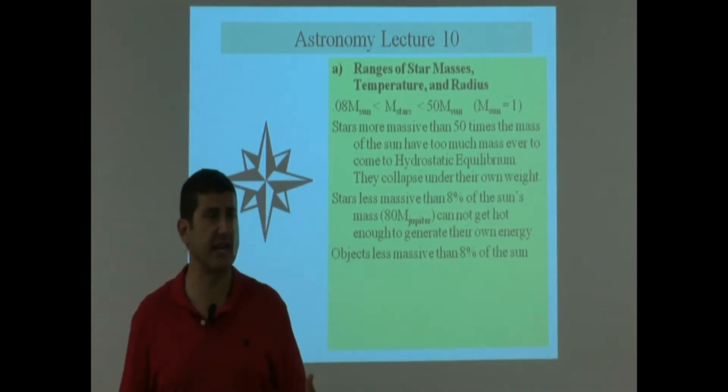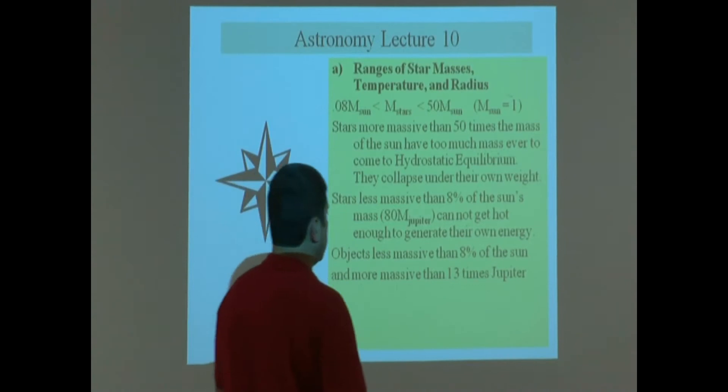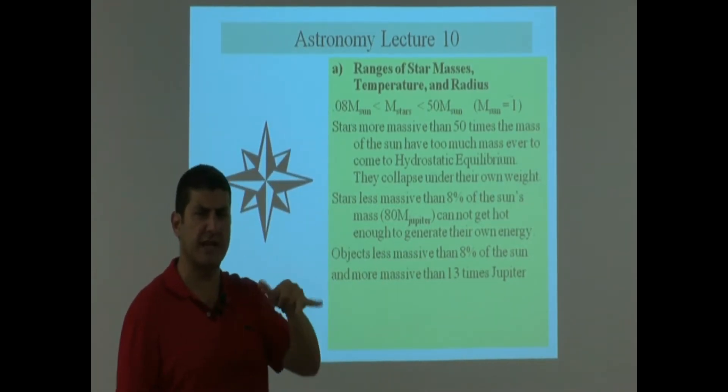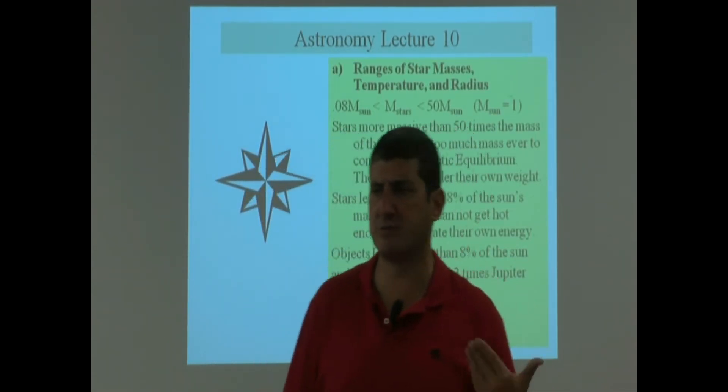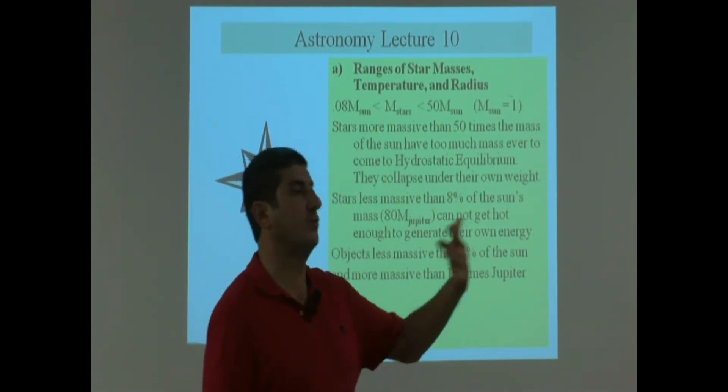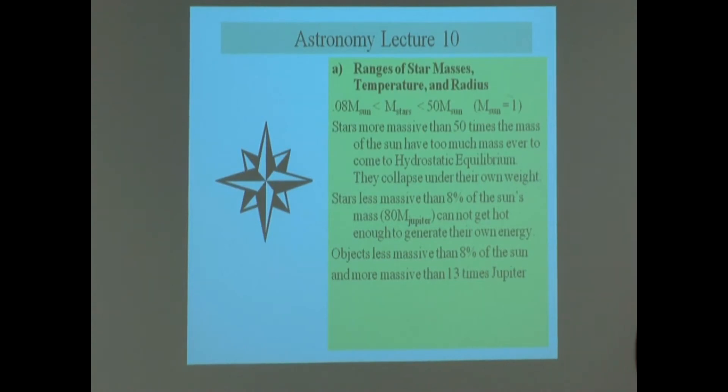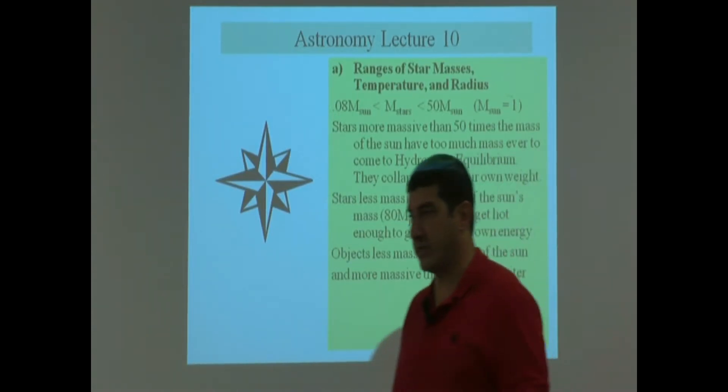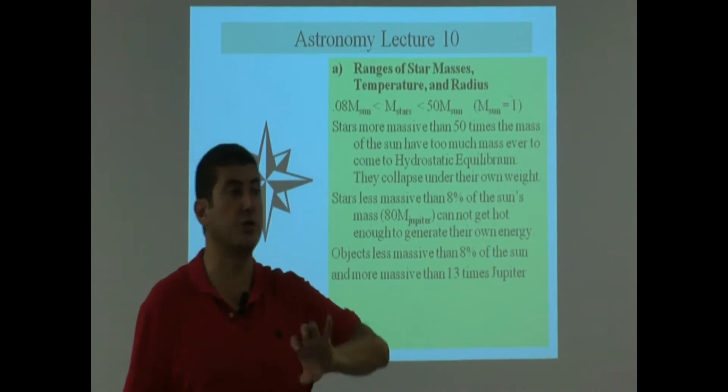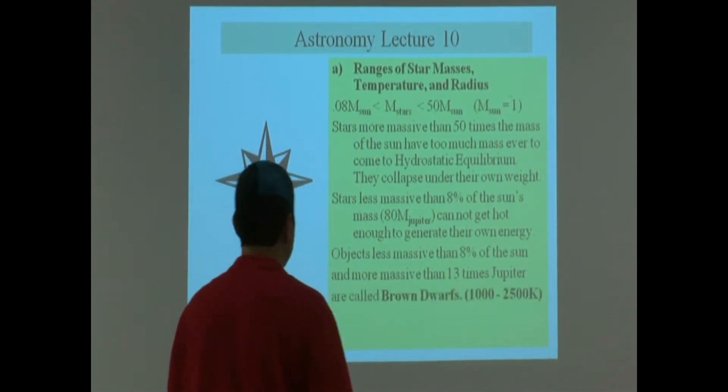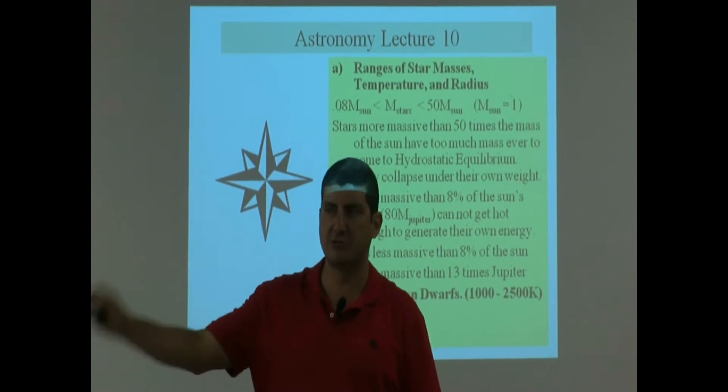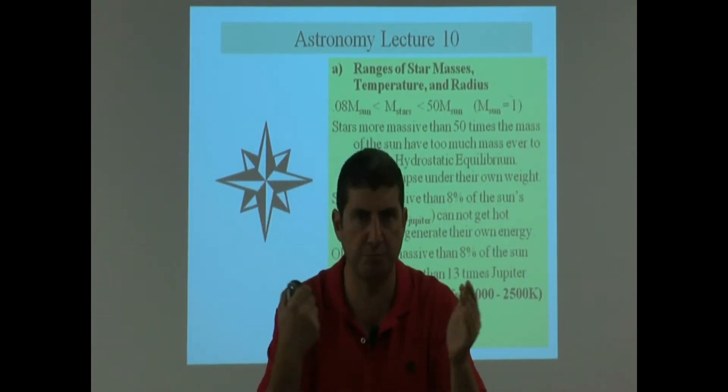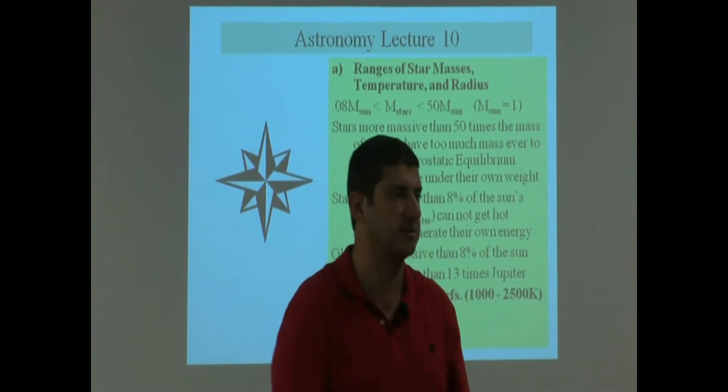However, objects less massive than 8% of the Sun and more massive than 13 times Jupiter, so there's kind of like a limbo category here. They're in limbo. They're bigger than Jupiter by about 13 times more massive than Jupiter, but they're not full-on stars. They're not 80 times the mass of Jupiter. They are in limbo. They're neither a full-on star, they're neither a planet. They can create energy using other processes. These things are known as brown dwarfs.